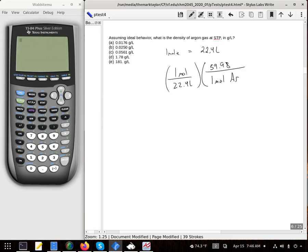So, on my calculator, if I take 39.98 and divide it by 22.4, I end up with 1.78.